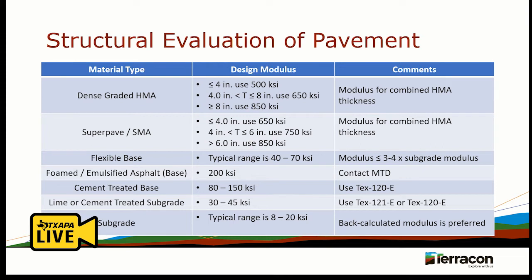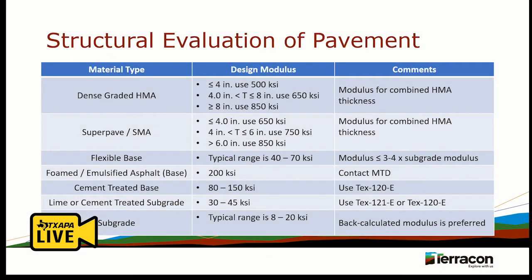Now let's talk about design modulus values. This table is pulled from the pavement manual, and districts can do their own values based on experience with their soils and materials and put them in their SOP. Starting from the bottom up, you have your subgrade — typical range is 8 to 20 KSI, but some subgrades can be as low as 5 or 6 KSI. The preferred way to get the subgrade modulus is through FWD back calculation. For flexible base, the typical range is 40 to 70 KSI, but that modulus shouldn't be higher than 3 to 4 times your subgrade modulus.